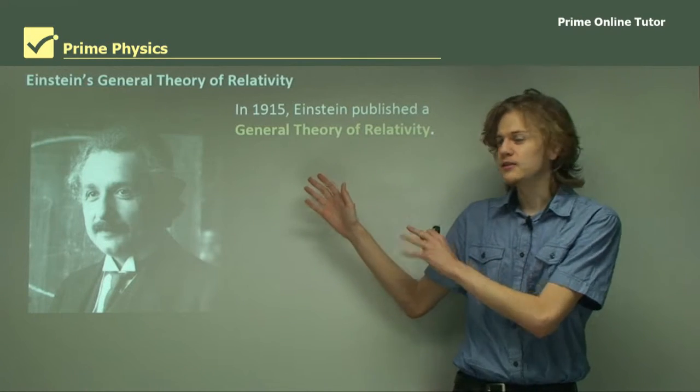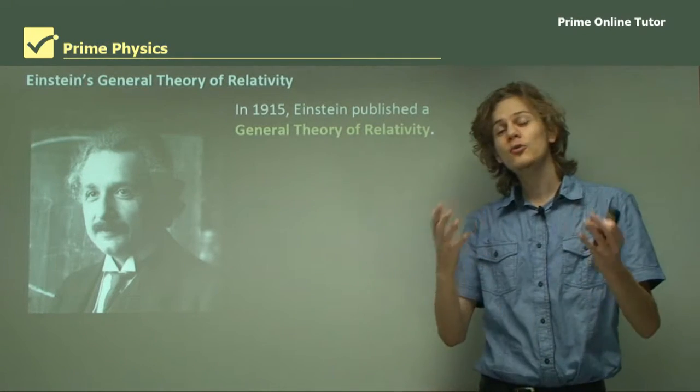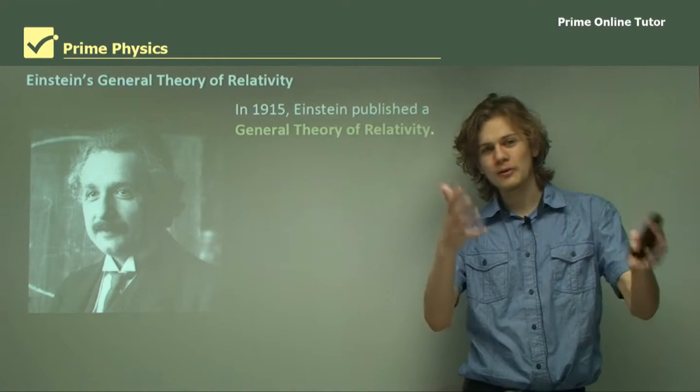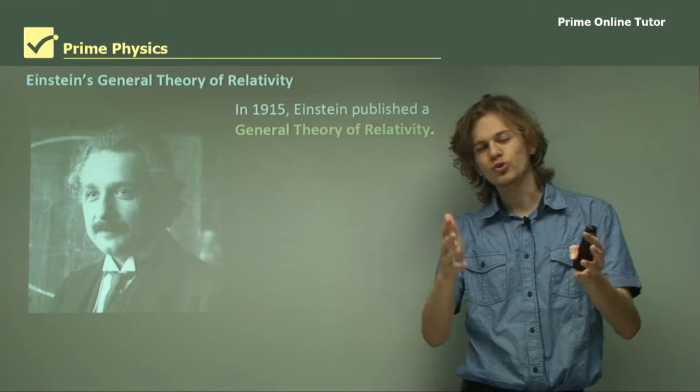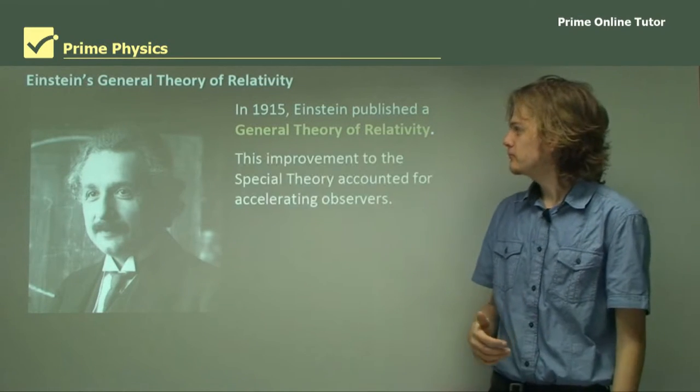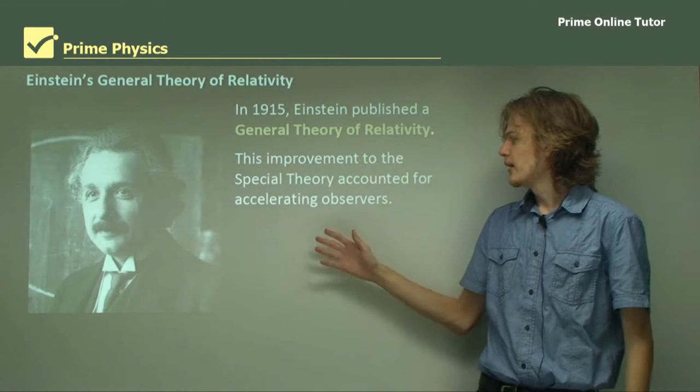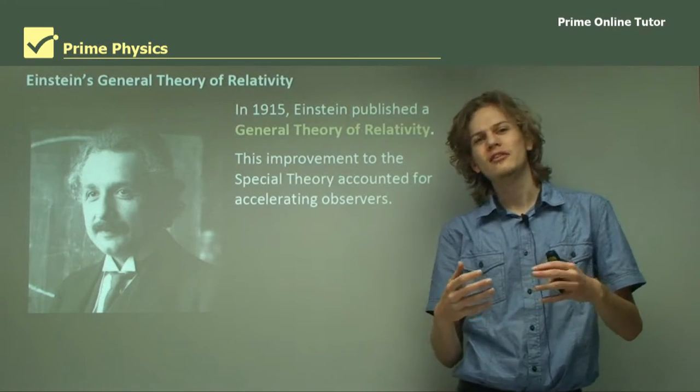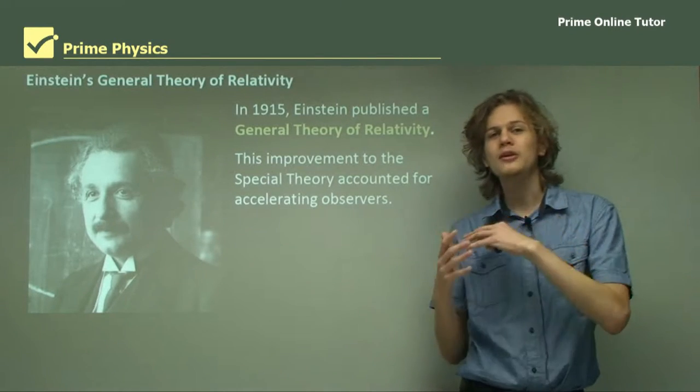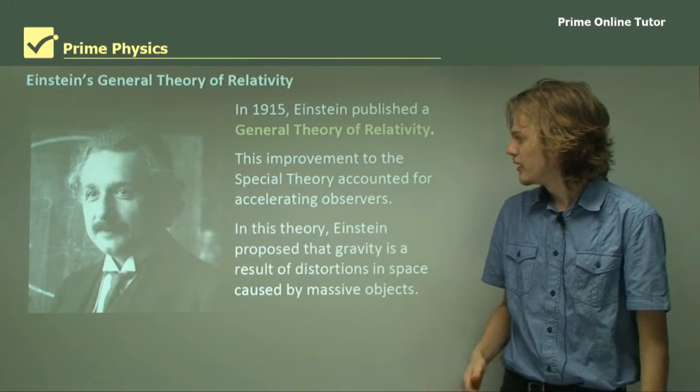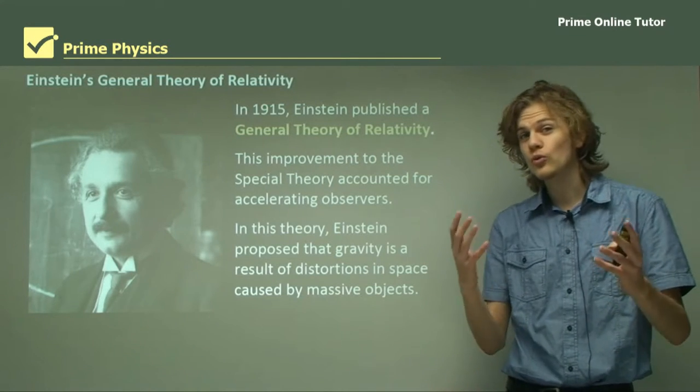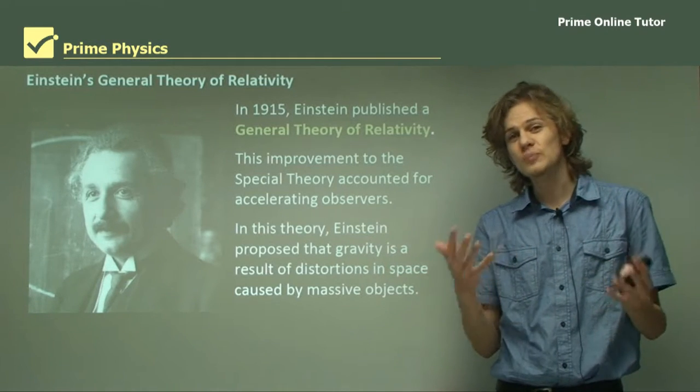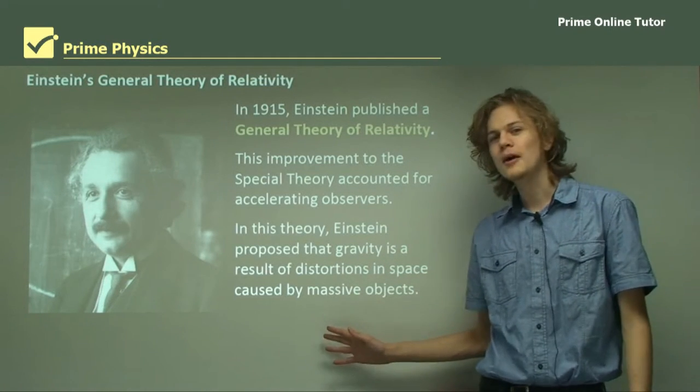In 1915, 10 years later, Einstein published his general theory of relativity, and this works for the general case. That meant that whether or not people were speeding up or slowing down, it was always able to apply. This improvement to the special theory accounted for accelerating observers. And as we remember, accelerating means that the observer is speeding up or slowing down or changing direction. In this theory, Einstein proposed that gravity is a result of distortions in spacetime caused by massive objects.